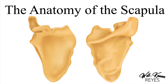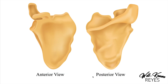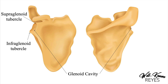Alright students, let's get started. Today we are covering the anatomy of the scapula. First we should be able to see this is the anterior view and posterior view. Now how do I know if this is the left side scapula or the right sided scapula? After this presentation you should be able to identify which scapula it is, left or right. So let's go ahead and dive into this.